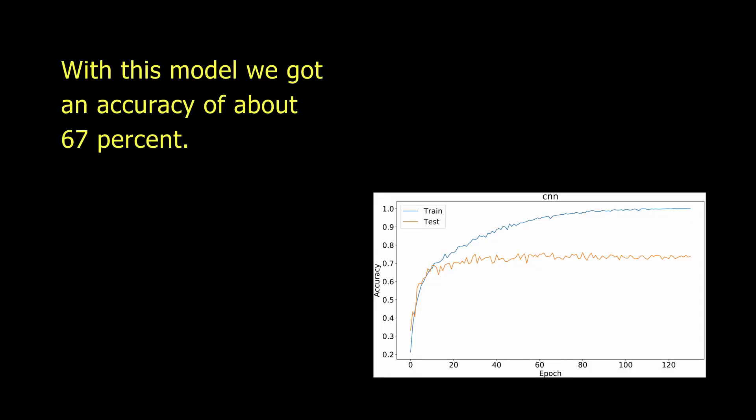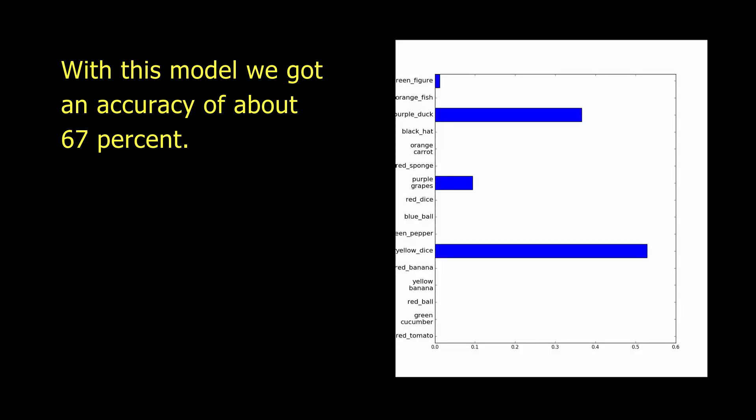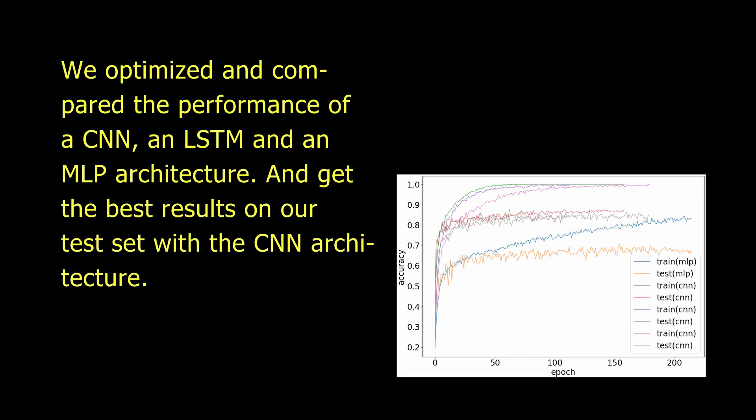With this model we got an accuracy of about 67%. We optimized and compared the performance of a CNN, an LSTM, and an MLP architecture, and get the best results on our test set with a CNN architecture.